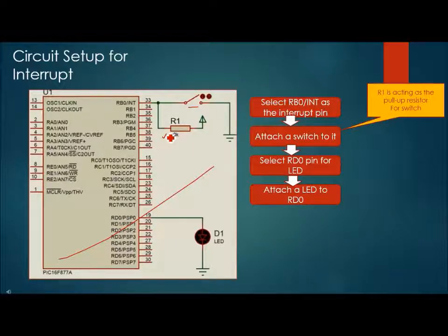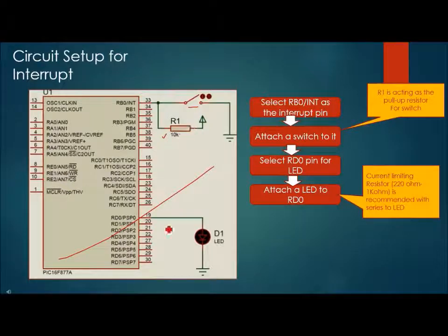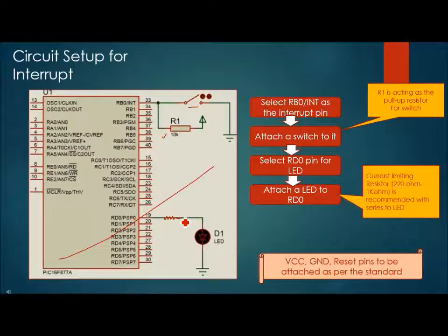It is better if you use current limiting resistance in series to the LED. This will keep LED safe. You can use a resistor of value between 220 ohm to 1K. You need to follow standard rule for VCC, ground, and reset circuit.